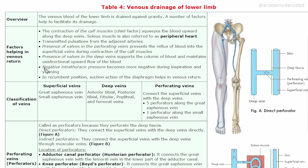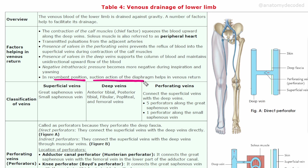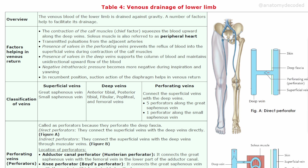Negative intrathoracic pressure, which becomes more negative during inspiration and yawning, also aids venous return. In the recumbent position — that means lying down — the suction action of the diaphragm helps in venous return. So all these factors help in returning the venous blood towards the heart, as the blood has to travel anti-gravity.